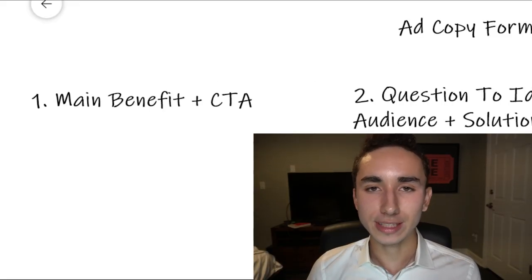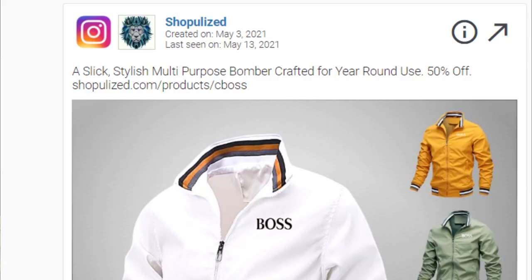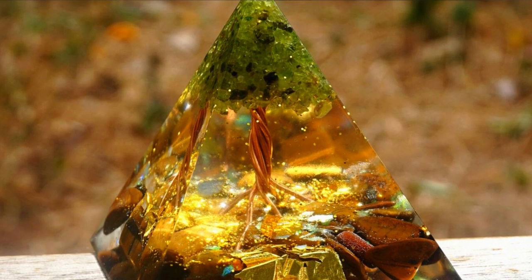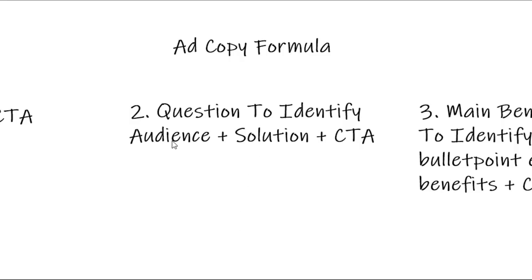When it comes to writing ad copy, there are three simple formulas I use every time. The first is main benefit plus call to action: one sentence about your product's main benefit, followed by a CTA like 'for a limited time only, save 50% off.' For crystal pyramids, the benefit might be 'transform your life and become the best version of yourself in only 21 days,' followed by the limited-time offer.